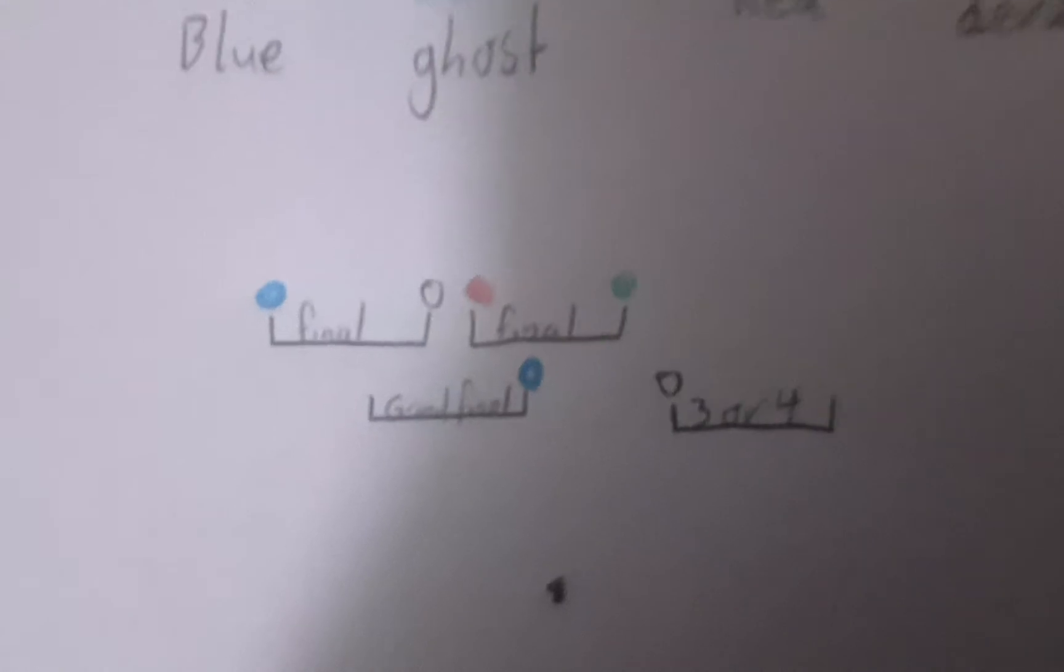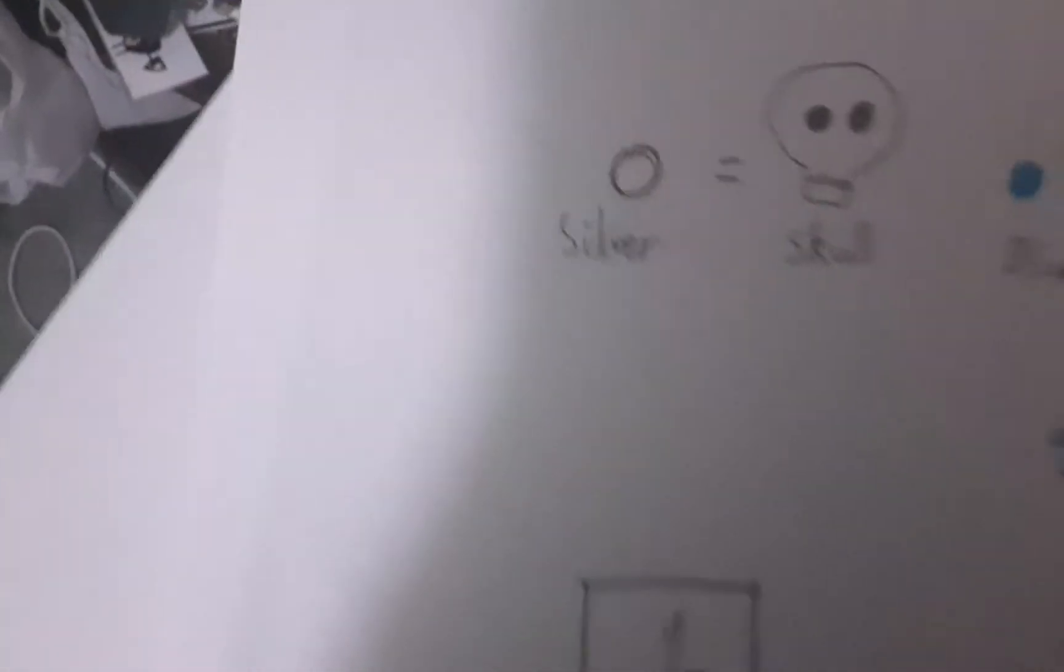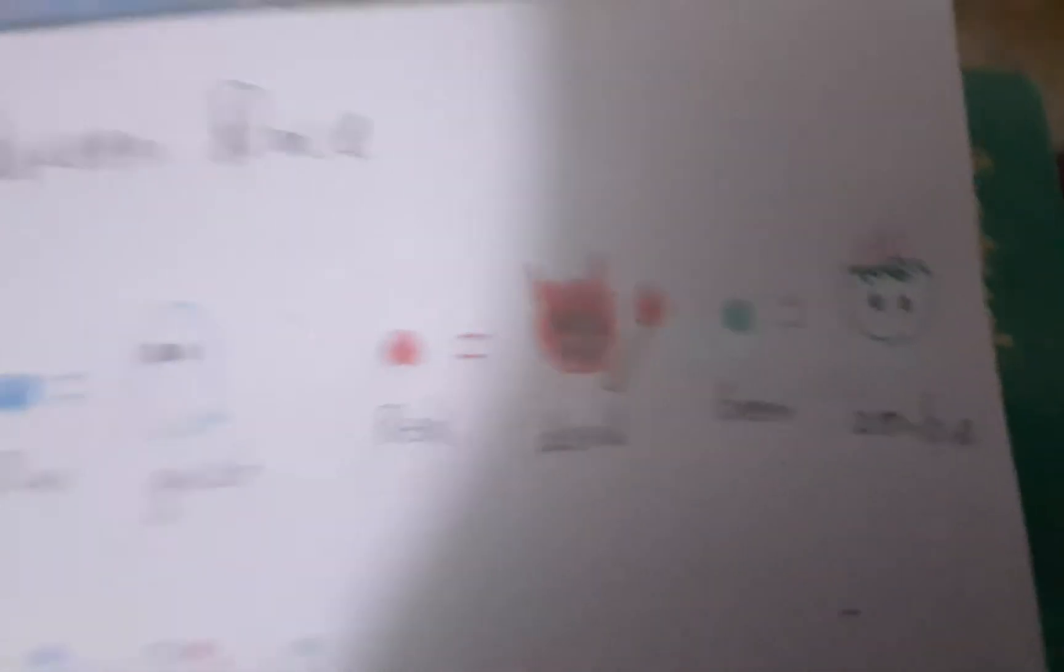So now the stats have been updated. Blue has made it into the grand final. Now I forgot to tell you the themes. Silver is skull, blue is ghost, red is devil, and green is zombie.